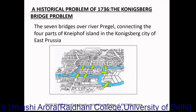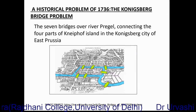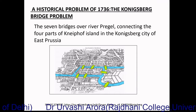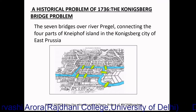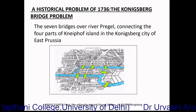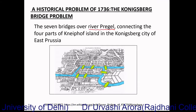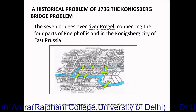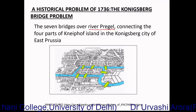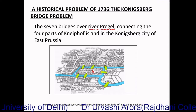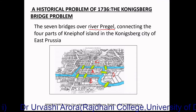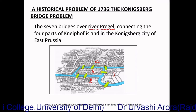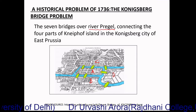Coming to the Königsberg bridge problem, which is the problem we are discussing in this video lecture — it is a historical problem of the year 1736. In the 18th century there was a city called Königsberg, which was the capital city of East Prussia. Today Königsberg is the westernmost city in Russia. Through the city of Königsberg flowed a river called River Pregel, which branched itself and divided around the Nipov island, dividing the Königsberg city into four land masses labeled A, B, C, D. These four land masses were joined by seven bridges, shown in green in the figure. This is how the map of Königsberg city looked in 1736.